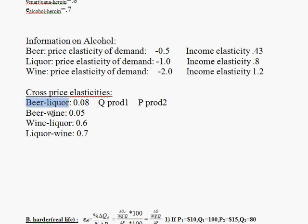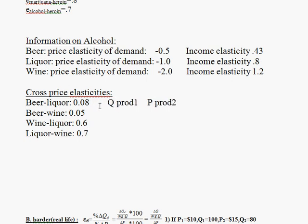So to clarify the notation: if the price of liquor changes, how does the quantity of beer respond? If the price of wine changes, how does the quantity of beer respond? If the price of liquor changes, how does the quantity of wine respond? And switching those two: if the price of wine changes, how does the quantity of liquor respond? You get two different elasticities depending on which is the cause and which is the effect.